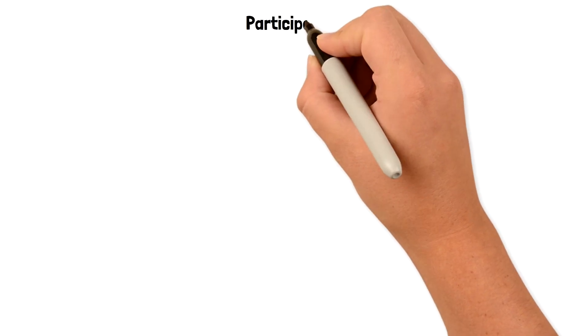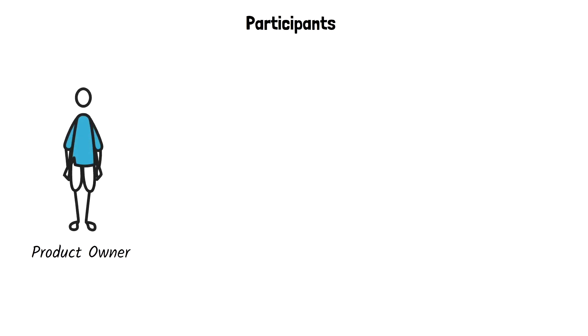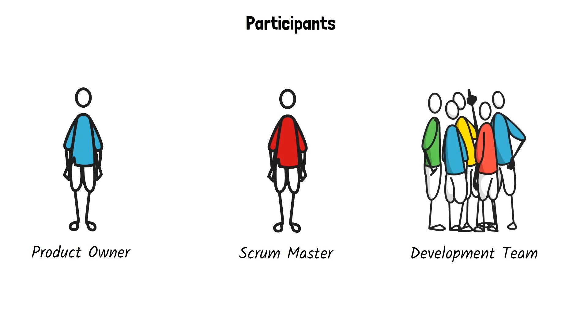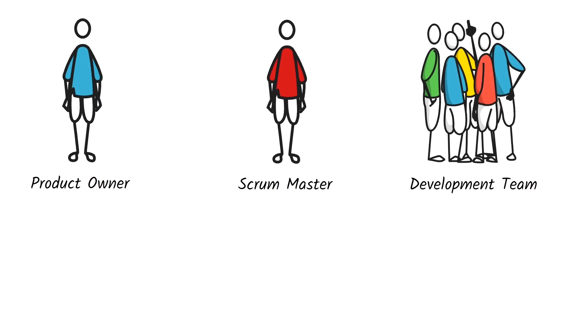The participants of the Sprint Retrospective are the Product Owner, Scrum Master, and the Development Team. This discussion is usually internal without stakeholders or other outside teams.